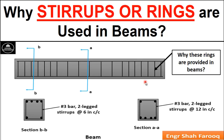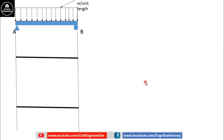In this video lecture, we are going to discuss why stirrups or rings are used in beams. To know the answer about why stirrups or rings are provided in beams — what is the function of stirrups or rings in a beam — watch the video in full. Let's start today's discussion by considering a case of a simply supported beam carrying a uniformly distributed load.